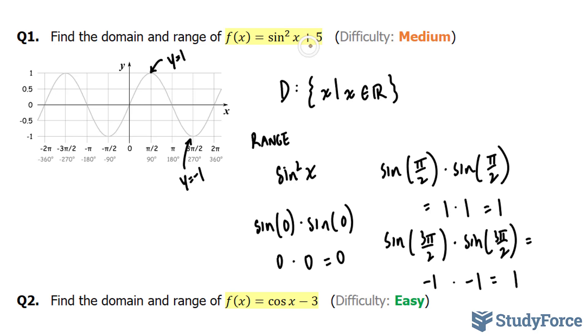Now we also have this +5 added to sin²x. We know that when something is added to a function, it shifts the function vertically.